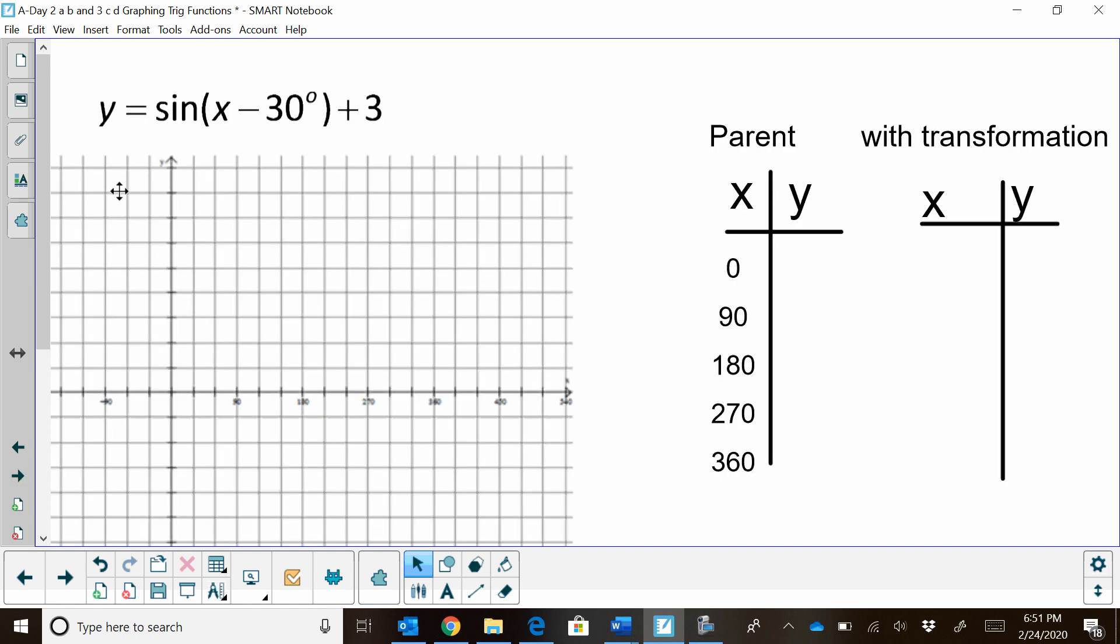Let's start by looking at y equals sine of x minus 30 degrees plus 3. So that means we have a shift in the horizontal direction to the right of 30 degrees, and we have a vertical transformation up a positive 3. I'm going to teach you two different ways. I'm going to start with the parent graph.